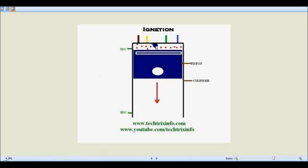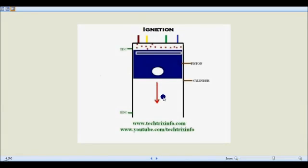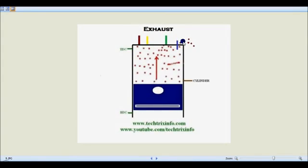This is the initial point of the ignition stroke or power stroke. The piston is at the top dead center and the spark plug at the center creates a spark, which causes combustion of the fuel inside the cylinder. That combustion creates pressure on top of the piston, pushing it down as shown by the arrow. All the valves are in closed condition.